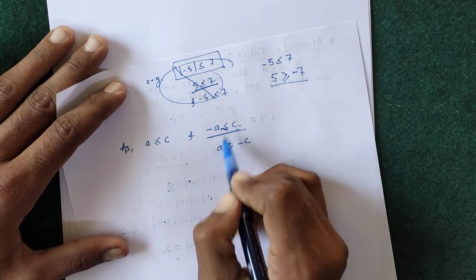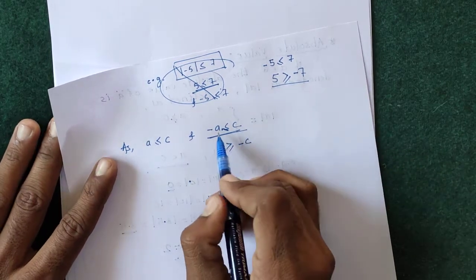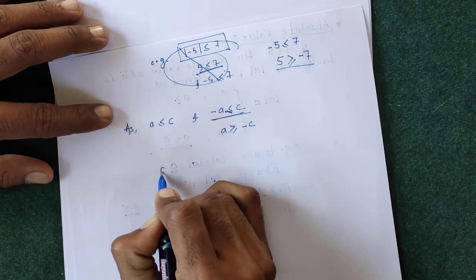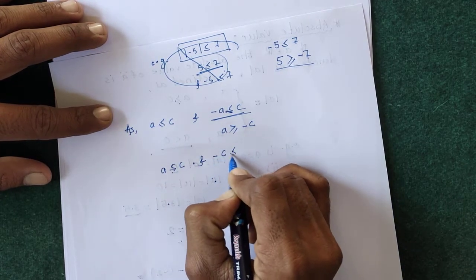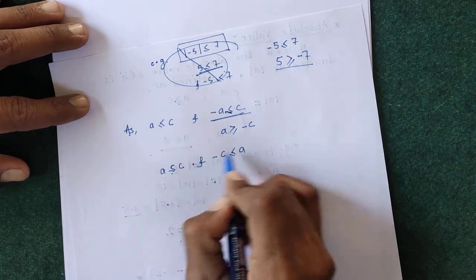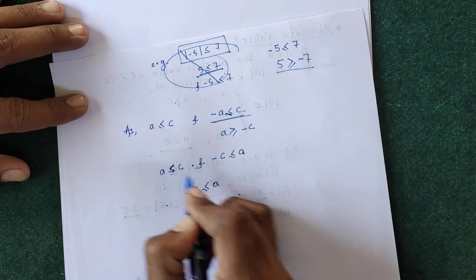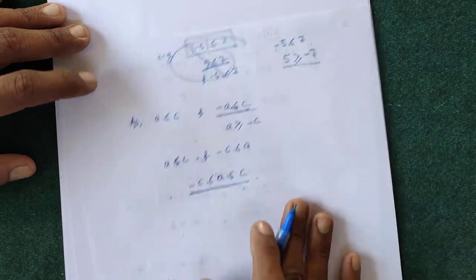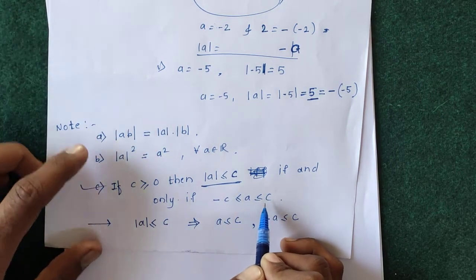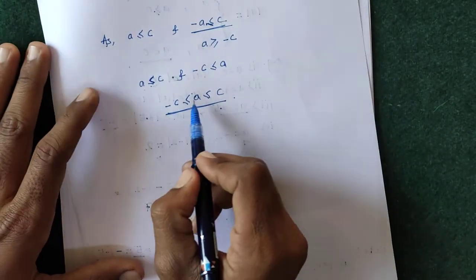In the converse part of property 3: suppose −c ≤ a ≤ c. We split this as −c ≤ a and a ≤ c. Multiplying −c ≤ a by −1 gives c ≥ −a, i.e., −a ≤ c. So we have both a ≤ c and −a ≤ c. If a is positive, mod a equals a ≤ c. If a is negative, mod a equals −a ≤ c. Hence mod a ≤ c. This completes the proof of property 3.